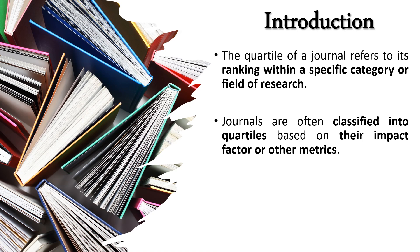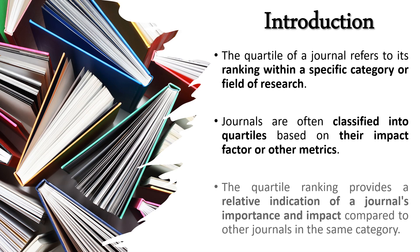Journal quartiles are often used in the context of bibliometric databases and journal citation indexes, such as Scopus or Web of Science. These are the two major databases commonly used, and they classify journals on the basis of quartiles. The quartile ranking provides a relative indication of a journal's importance and impact compared to other journals in the same category or field.